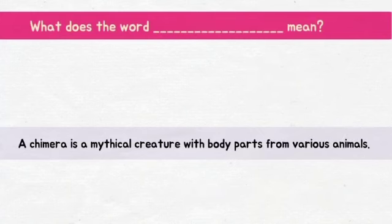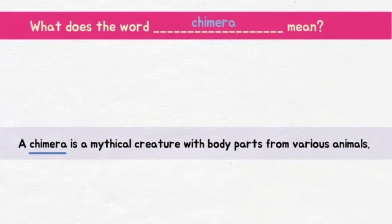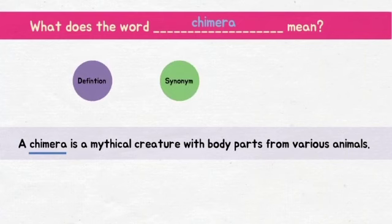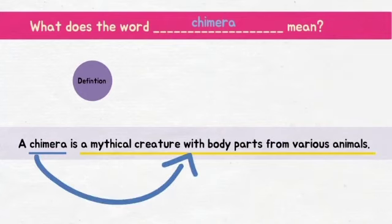In this sentence, can you guess what the word 'chimera' means? If I don't know what chimera means, I will see if one of the three context clues can help me understand it. The definition clue applies here — we can see right away that the author has given us the definition of chimera right after using the word. So from the definition clue, we are able to know that a chimera is a mythical creature that has body parts from different animals.